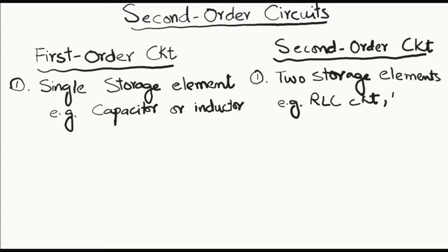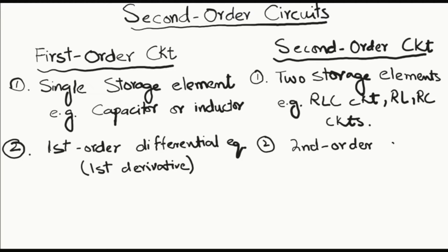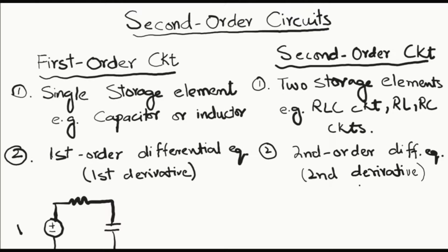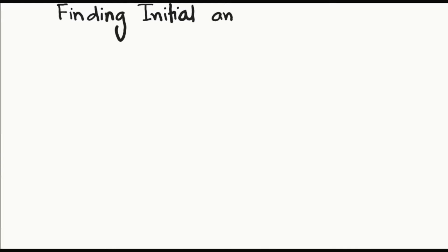Such as RLC, RL, or RC circuits. The second difference is that first order circuits are described by a first order differential equation — that means they involve a first derivative — while second order circuits are described by a second order differential equation as they include a second derivative. Here is a first order circuit with a voltage source Vs, a resistor R, and a capacitor — a single storage element. The second order circuit has a voltage source, a resistor, an inductor, and a capacitor — two storage elements.